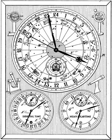Sidereal time is a timekeeping system that astronomers use to locate celestial objects. Using sidereal time, it is possible to easily point a telescope to the proper coordinates in the night sky.